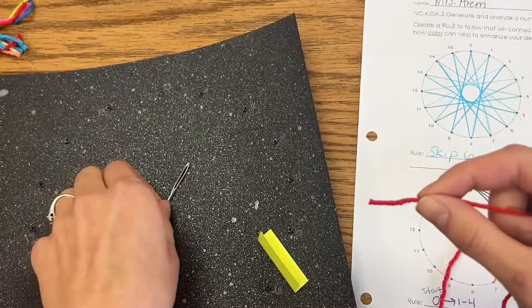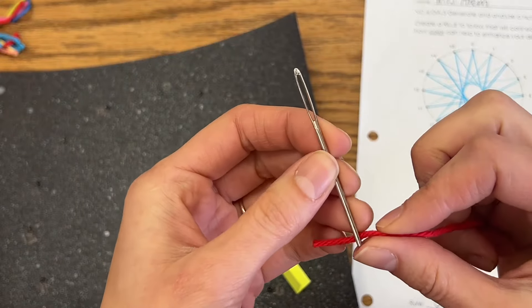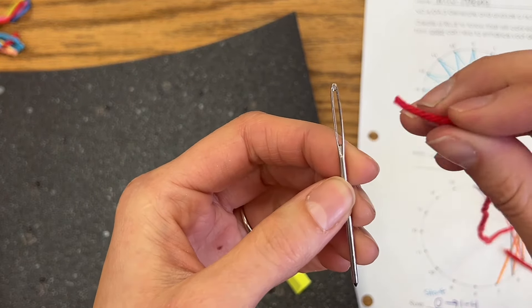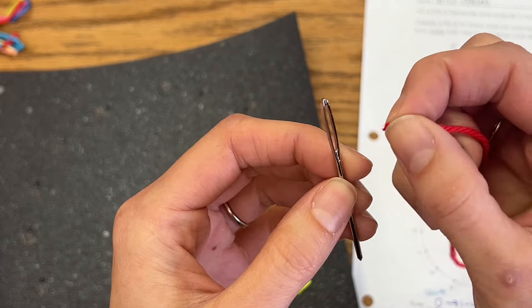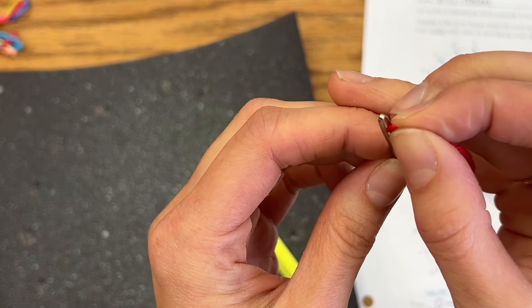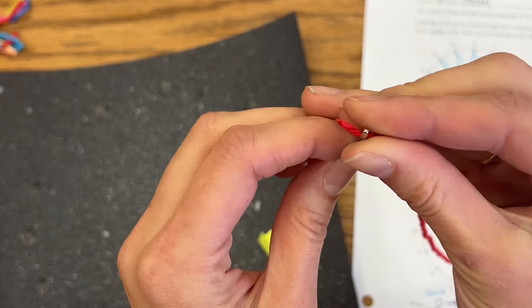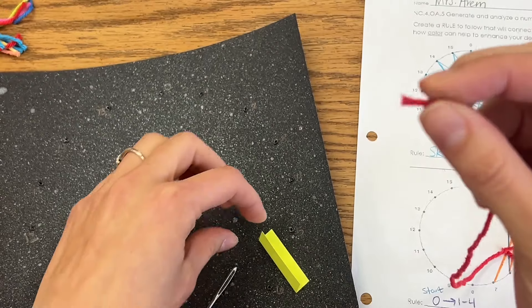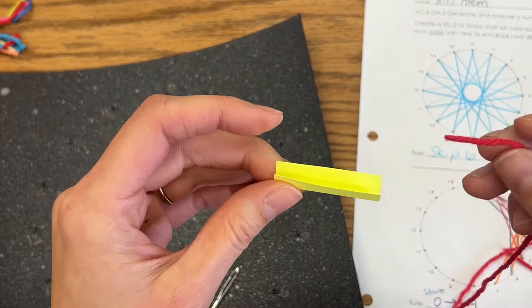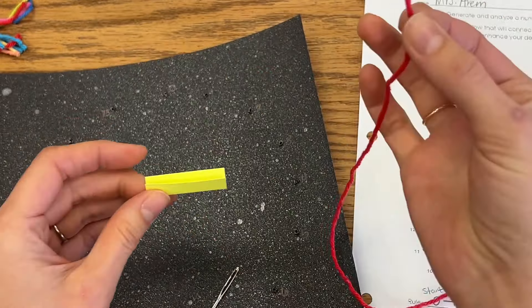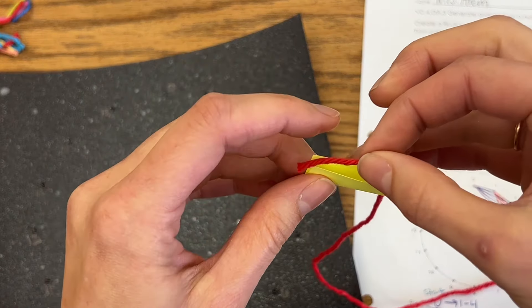We need to go ahead and thread our needle. I'm giving you some blunt needles that have very large eyes, but it can still be a little bit difficult to get this in. Some kids are really good at pinching it and pushing it through, but if that is hard for you then you can use what I call the hot dog bun.